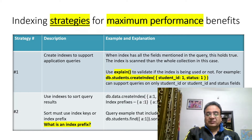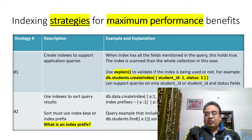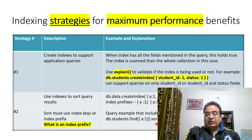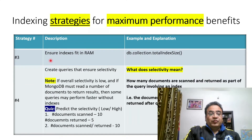If my query has a condition on field a and sorts by field b — which is the subsequent field in the index — I can say the query is using an index prefix. For example: db.students.find({a: 1}).sort({b: 1}). Because a and b follow the sequential order defined in the compound index, this allows the index to support the sort operation as well.